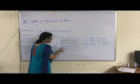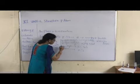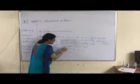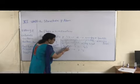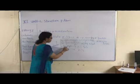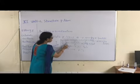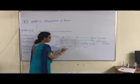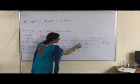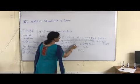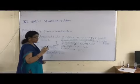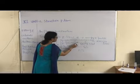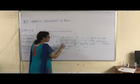Each subshell has a specific number of orbitals. In the S subshell, only one orbital is present at any energy level. In the P subshell, three orbitals are present — 2P has three orbitals, and 3P also has three. In the D subshell, five orbitals are present, as in 3D. The same rule applies at each energy level.